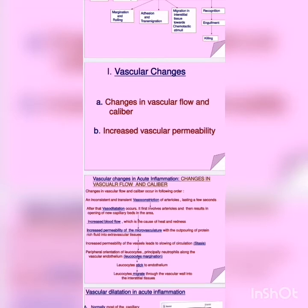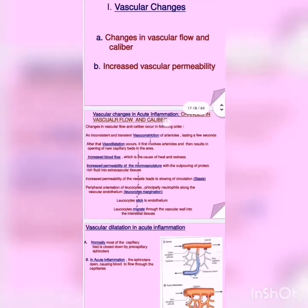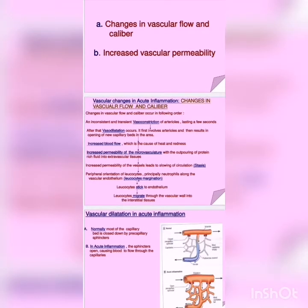Vascular changes in acute inflammation: number one is changes in vascular flow and caliber, number two is increased vascular permeability. When vascular changes occur, the immediate onset response is vasoconstriction — this is for a short time — but the sudden response in acute inflammation is vasoconstriction, which is then followed by vasodilation, meaning the caliber of vessels increases. Third is increased blood flow which causes heat and redness. Fourth, increased permeability of microvasculature with outpouring of protein-rich fluid into extravascular space — due to vasodilation, endothelial cells contract, gaps between them widen, causing fluid to move out of vessels.